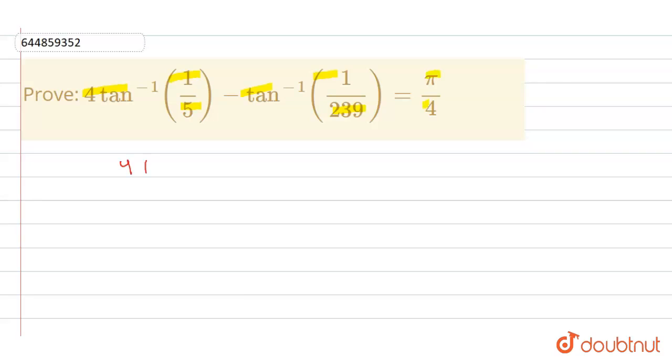We will take LHS here which is 4tan inverse of 1 by 5 minus tan inverse of 1 by 239. First of all, we will solve this part. Let's take it separately.